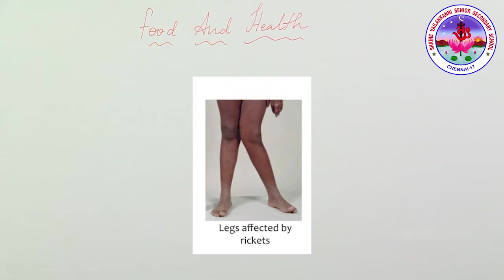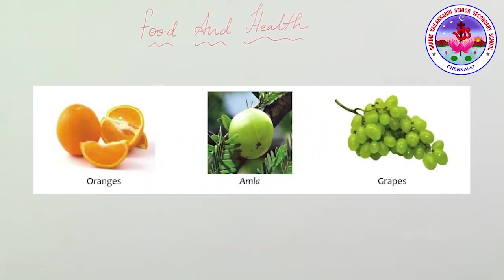To prevent rickets, drink milk, which contains calcium and phosphorus that make bones and teeth hard. Vitamin D is also called the sunshine vitamin because it is produced in the body when the skin is exposed to sunlight.